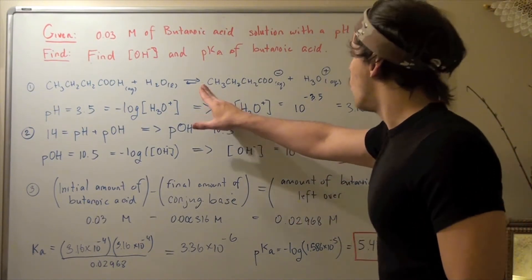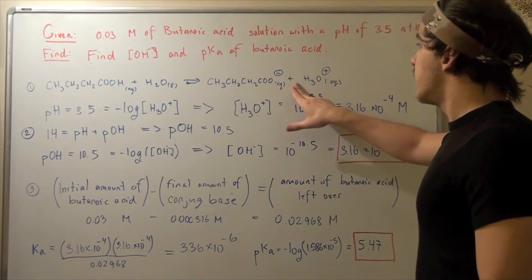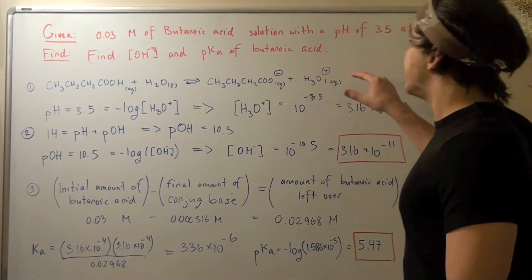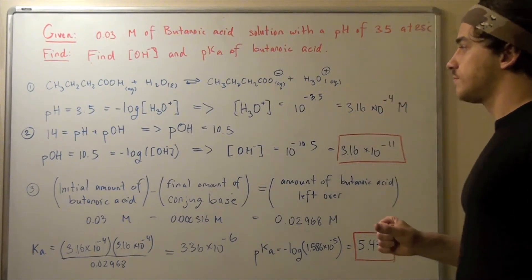That's because there's a 1 to 1 ratio. If this was a 2 and this was a 1, then I would have to multiply by 2. But since it's 1 to 1, they're equal.